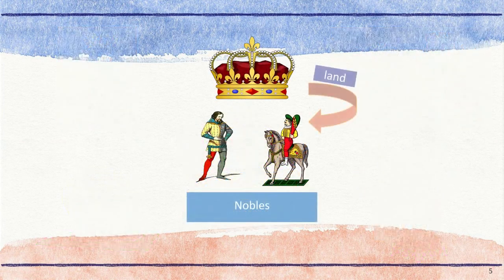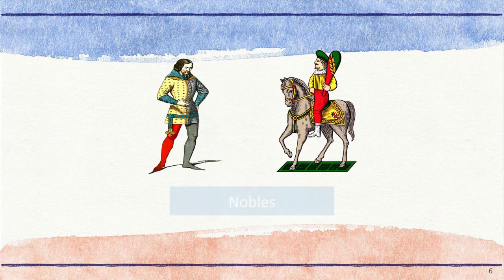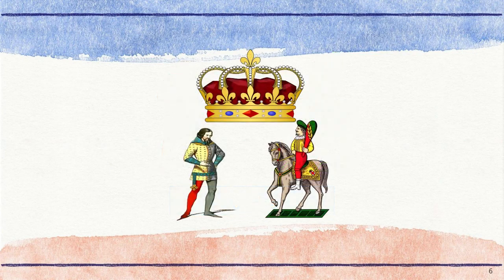Since kings had so much land to rule, they divided up large pieces of land to be managed by other powerful people called nobles. The more land you owned, the more powerful you were. In exchange for the land the king gave them, the nobles were expected to be loyal to the king and protect him. Nobles were the lords, barons, and other wealthy landowners in the kingdom — the second highest social class, answering only to the king.